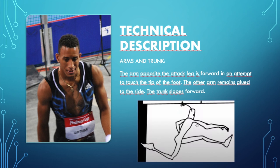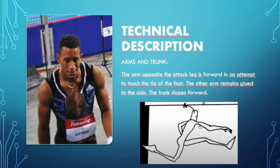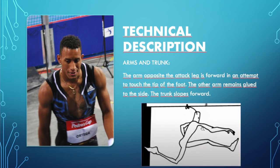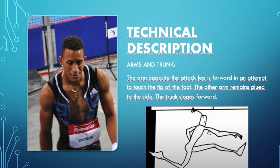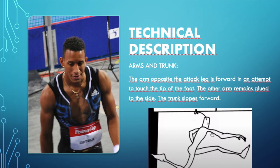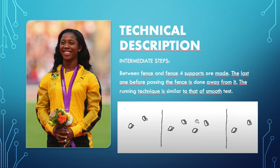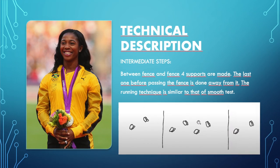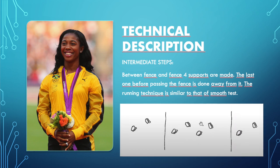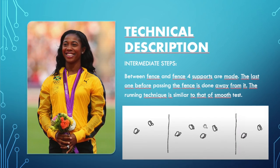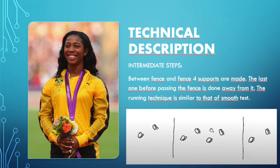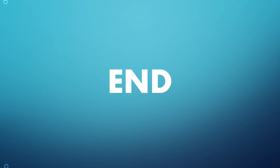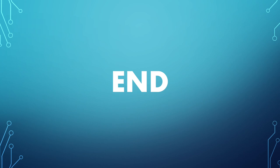The third part involves the arms and trunk. The arm opposite the attack leg is forward in an attempt to touch the tip of the foot, the other arm remains close to the side, and the trunk leans forward. Finally, the intermediate step: between one hurdle and the next, the last step before passing the hurdle is taken away from it. The running technique is similar to that of the flat sprint. And this is all about the fundamentals of hurdles in athletics.